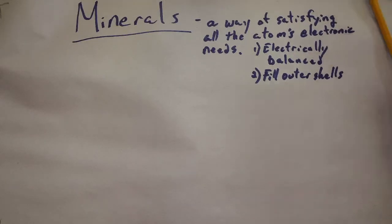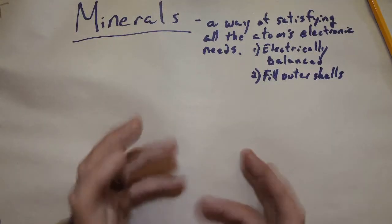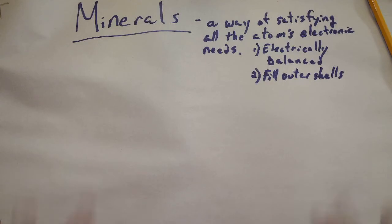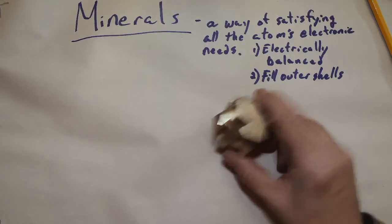So the other things that can happen are atoms can form large groups. Very specific arrangements will satisfy their needs. Now when that happens, you can get some remarkable objects.